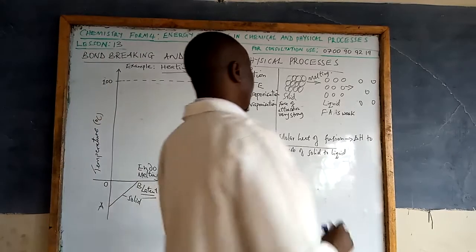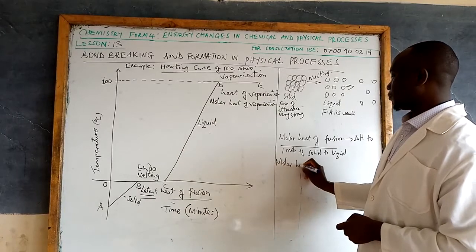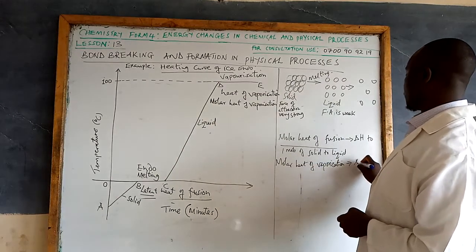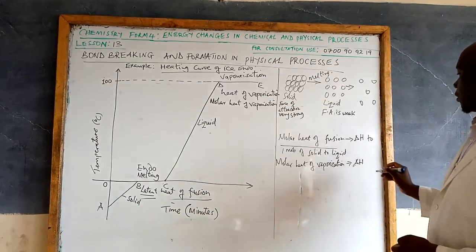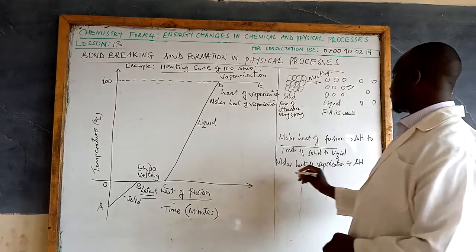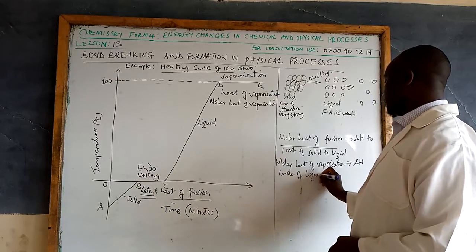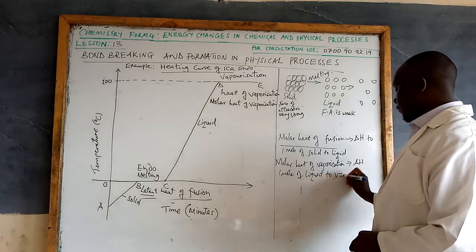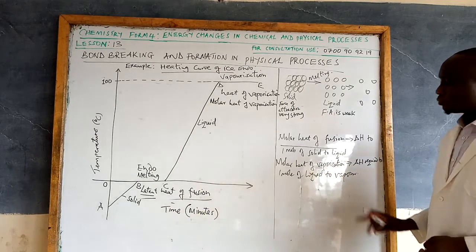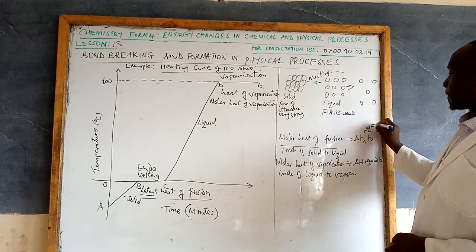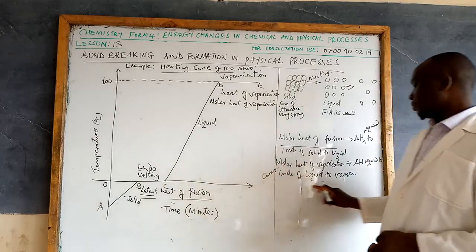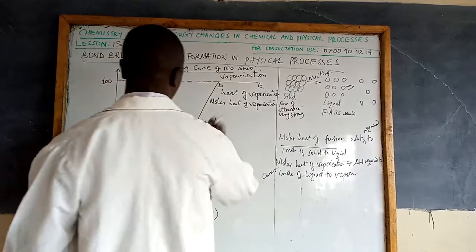The molar heat of vaporization is defined as the energy change, or the heat change required, to convert one mole of a liquid to vapor. So the enthalpy change to convert one mole of liquid to vapor is called the enthalpy of vaporization.